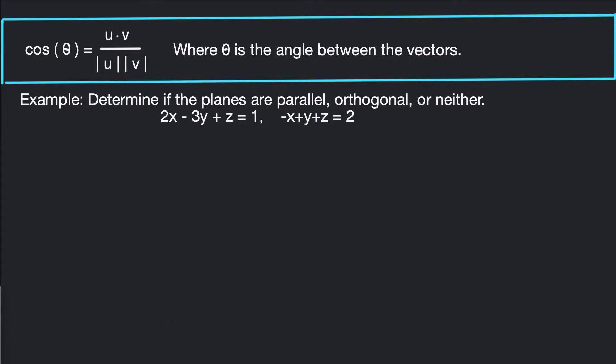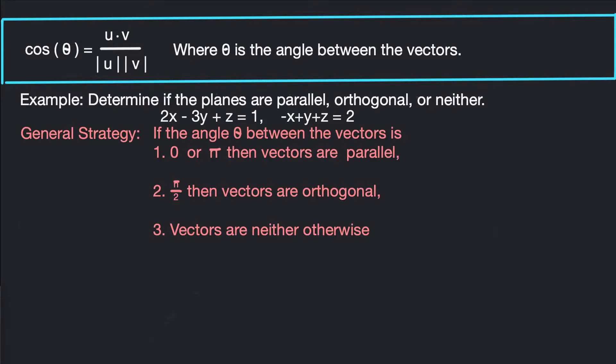Today we're looking at finding the angle between two planes, or determining whether the two planes are parallel, orthogonal, or neither. The strategy I'm going to teach you is to just find the angle between the planes — that's going to tell you whether or not they're parallel, orthogonal, or neither. You don't have to do the cross product or the dot product separately to figure this out.